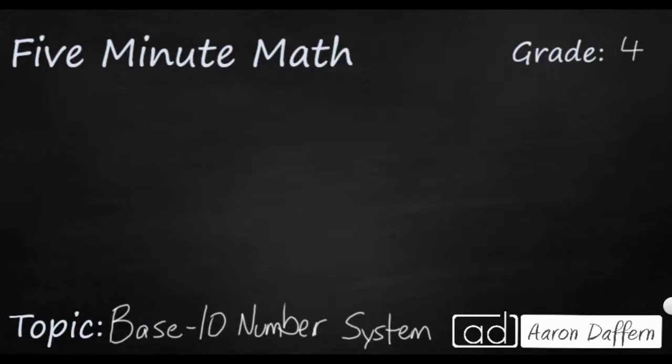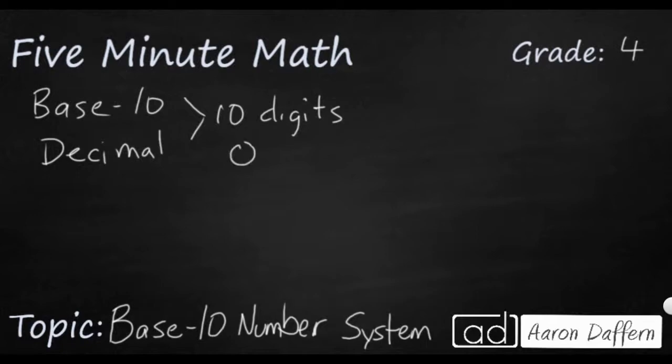So what is the base 10 number system? Well, the base 10 number system, sometimes it's also called the decimal system, and you probably have heard of decimals. But either way, what it says is you've got 10 digits that you can choose from, and the 10 digits are not 1 to 10 because 10 is not a digit. It's actually 0 to 9. The number 10 is made up of two different digits, 1 and 0. And they are placed in numbers, and then the value is based on the order or the position.